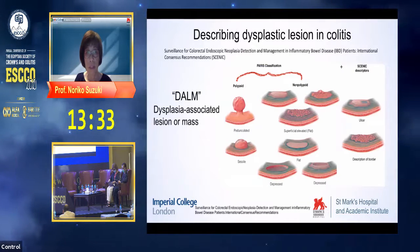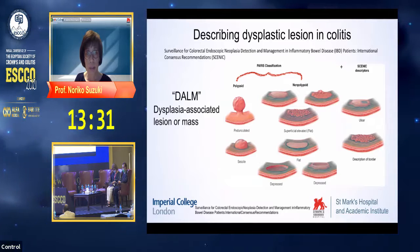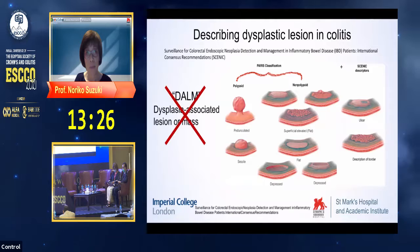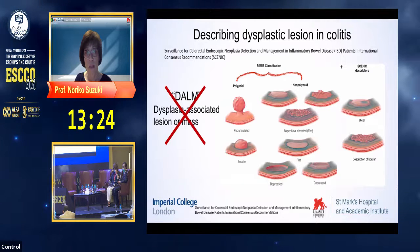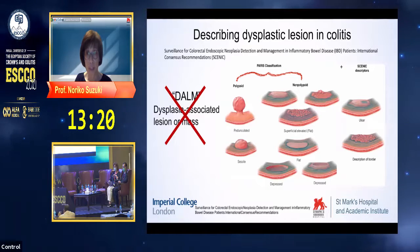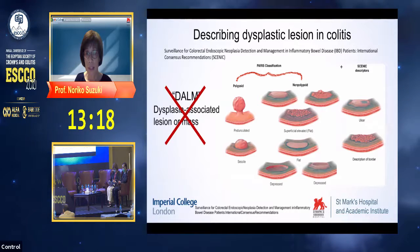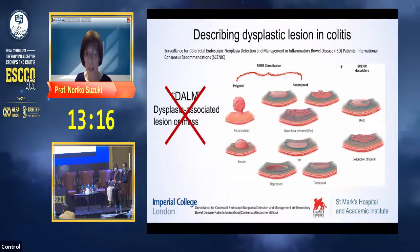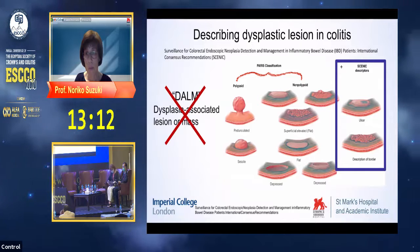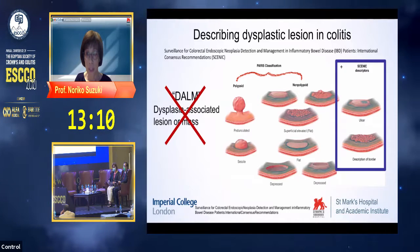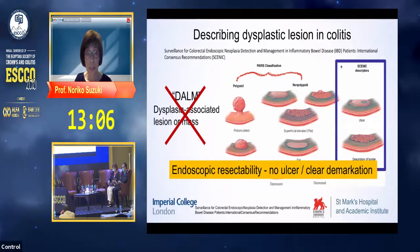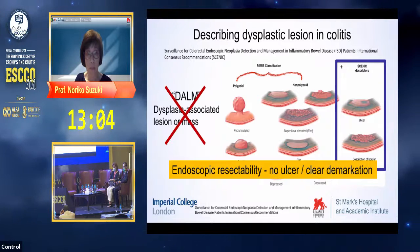Once dysplasia is detected, what should we do as an endoscopist? Don't just call it down. What we need to do is describe the dysplasia using Paris classification, and especially we have to assess the region — if there is an ulcer or not, or if the region has a clearly marked demarcation line or not. By this, we are assessing endoscopic resectability.